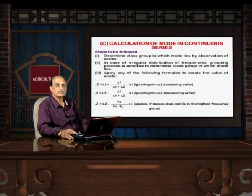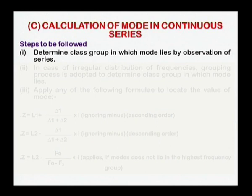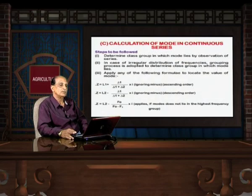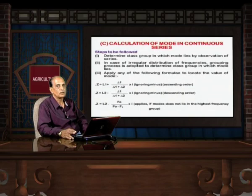First of all, I would like to discuss a problem which is based on determination of mode in respect of continuous series. In order to determine mode in respect of continuous series, some steps are required to be followed. The first is to determine the class group in which mode lies by observation of the series. If we closely observe the group of the class, we can locate the class interval in which the mode lies. In case of irregular distribution of frequency, grouping process is adopted to determine the class group in which mode lies, and this is adopted only when observation of the class group is not possible.